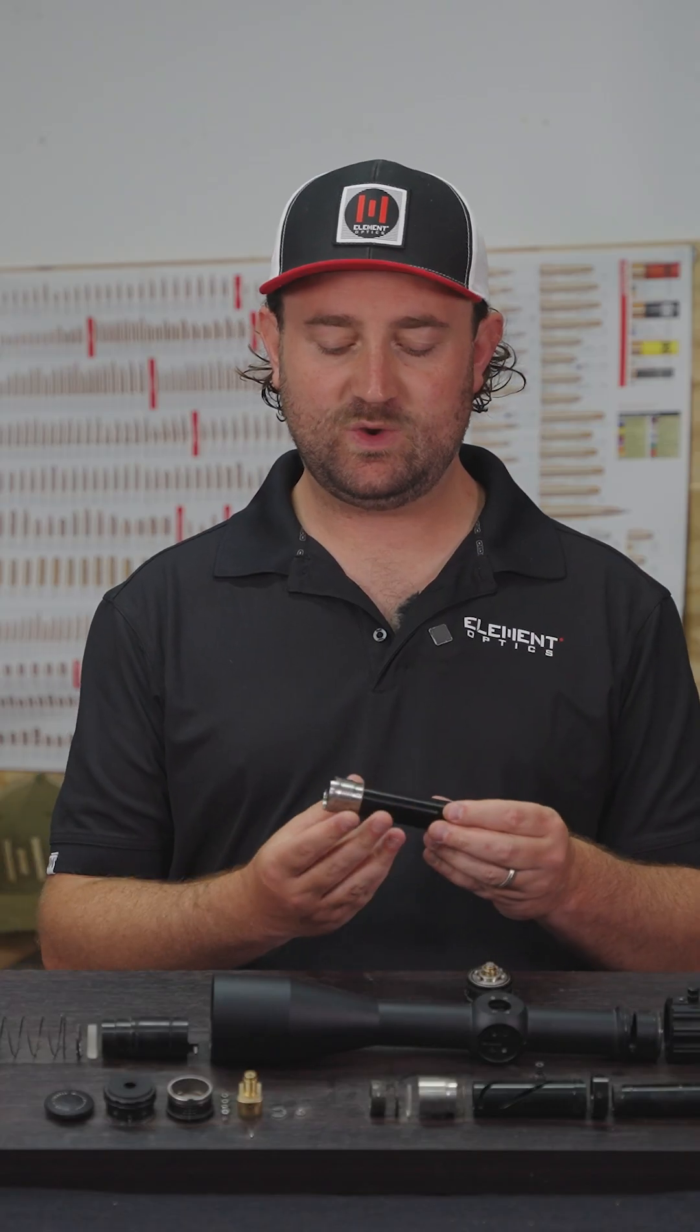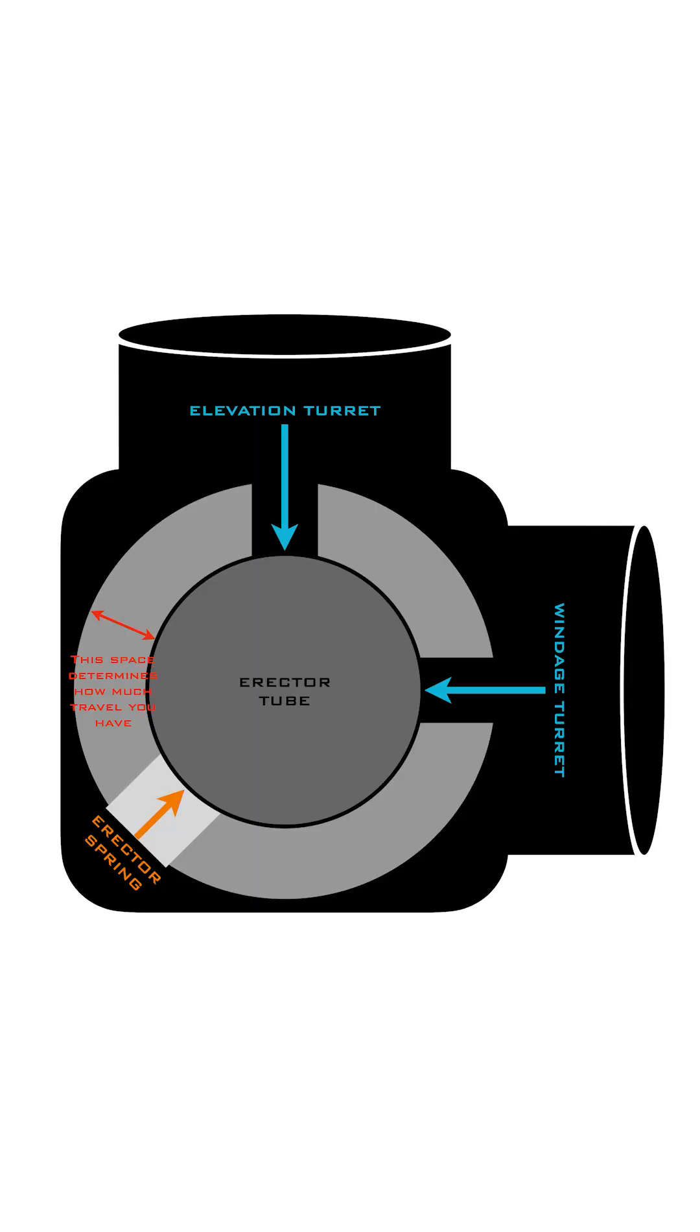The clearance between the erector tube and the body tube is what determines how much elevation and windage travel you will have and that is why generally speaking a larger body tube does mean that you will have more elevation travel.